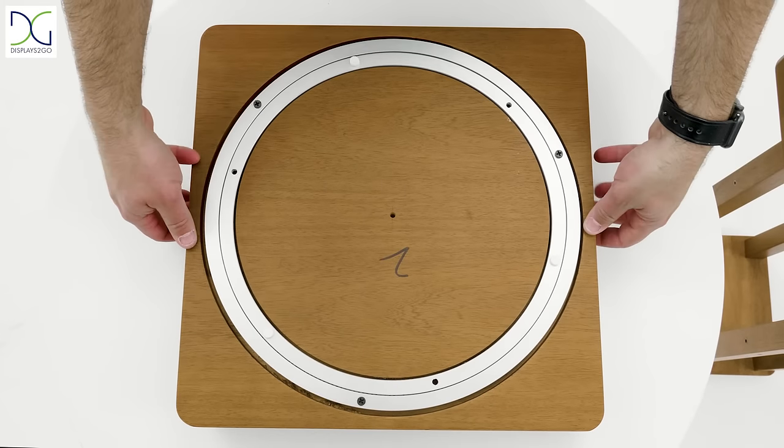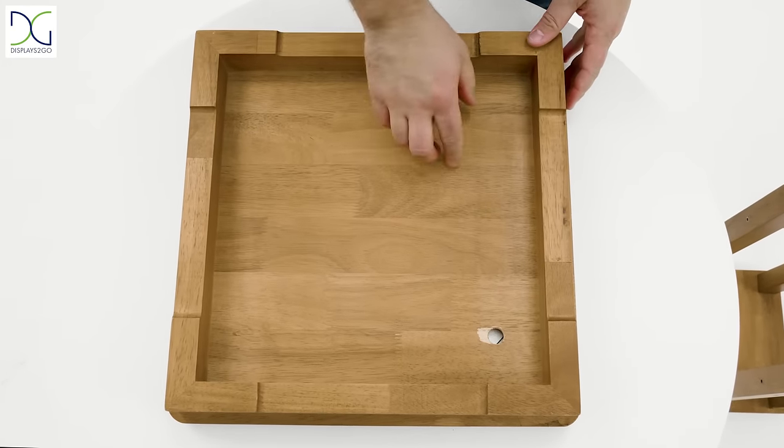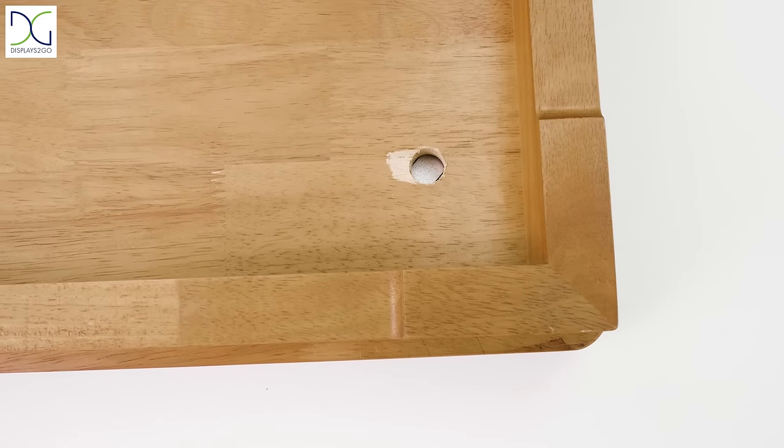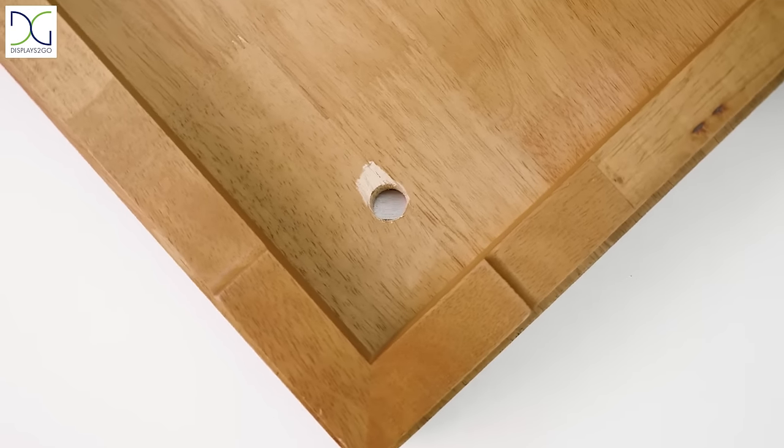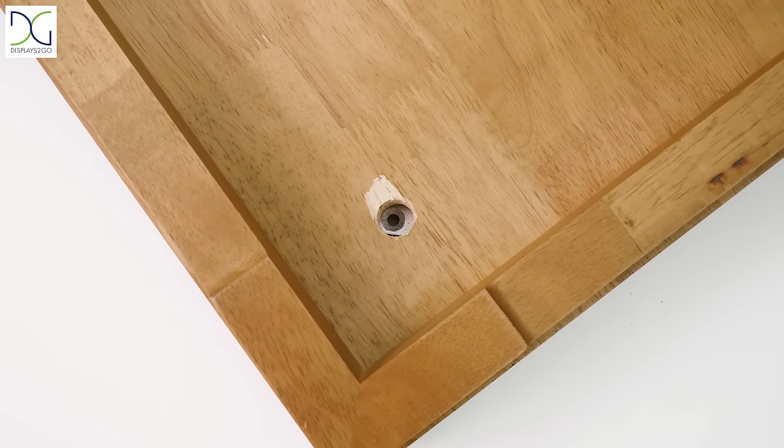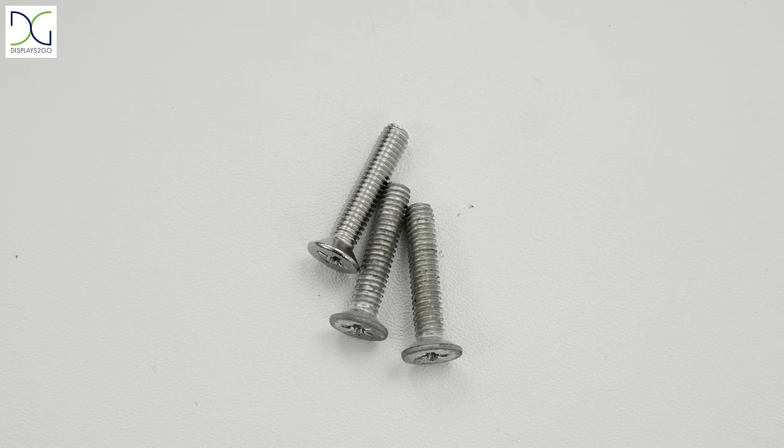Step 3. Place the wooden base on the floor upside down. Rotate the base to align the through hole on the wooden base with one hole on the rotating plate. Insert one long M4 screw through the hole and let it rest on the rotating plate.